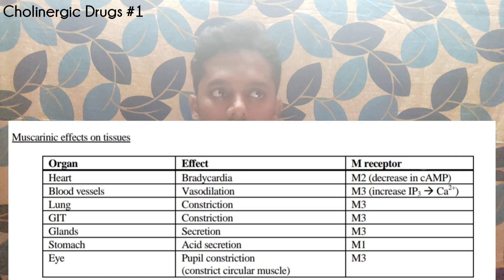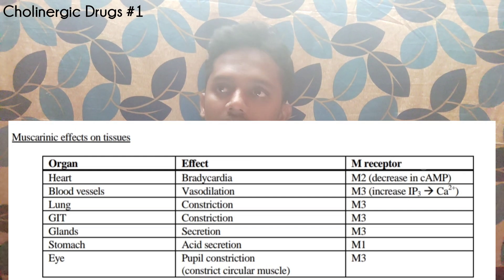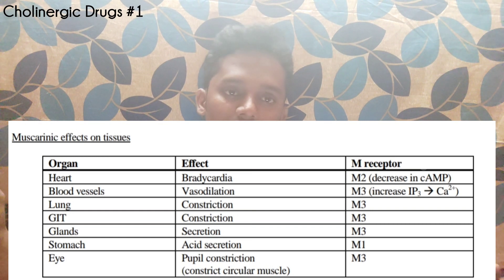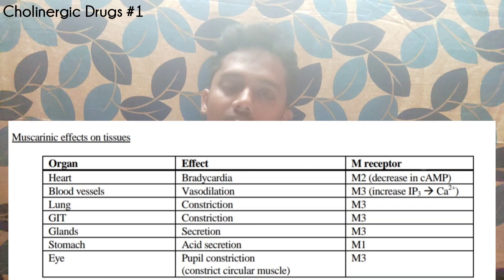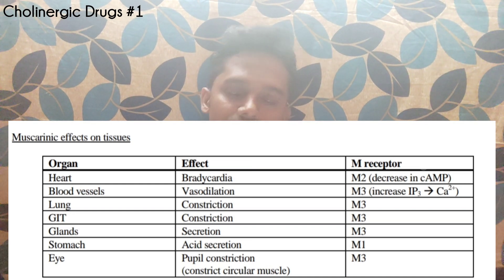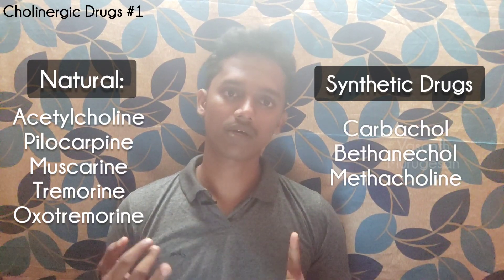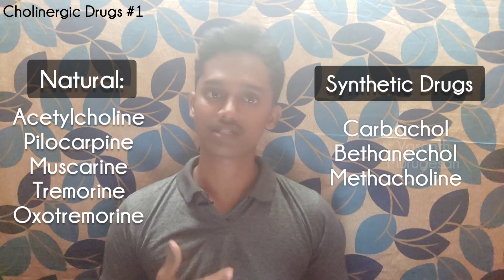It is easy to remember: adrenergic agonist and cholinergic agonist are two antagonists with opposite effects. In the eye, adrenergic drug causes dilation and cholinergic drug causes constriction. Now, the cholinergic agonistic drugs — examples include natural drugs: acetylcholine (natural to our body), pilocarpine, muscarine, tremorine, and oxotremorine (naturally available from plants). Synthetic drugs include carbachol, bethanechol, and methacholine — these are synthetically produced drugs.